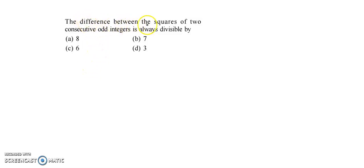The difference between the squares of two consecutive odd integers is always divisible by... Now we know that in general an even integer is represented by 2n and an odd integer is represented by 2n plus 1. Now we are interested in two consecutive odd integers.